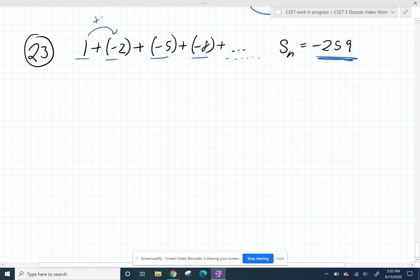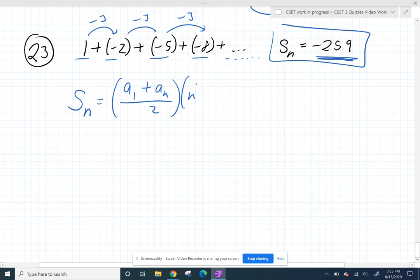We recognize this as an arithmetic sequence. We just keep subtracting 3 every time. If we're dealing with the sum of an arithmetic sequence, we've got a formula for that.